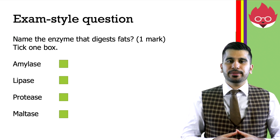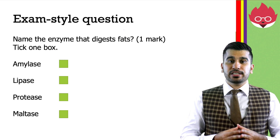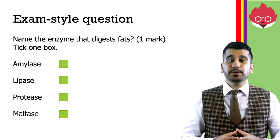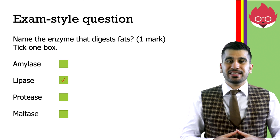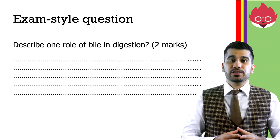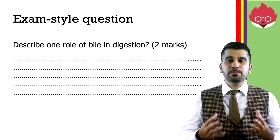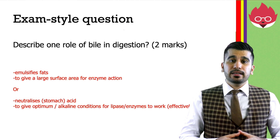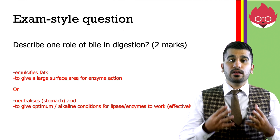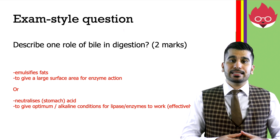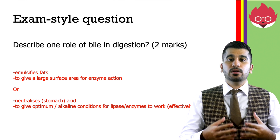Let's look at an exam question. Name the enzyme that digests fats — tick one box. You can pause the video while you think. The correct answer is lipase. In this next question, describe the role of bile in digestion. Bile emulsifies fats to give a large surface area for enzyme action. Or you can say it neutralizes stomach acid to give the optimum conditions for lipase to work effectively.